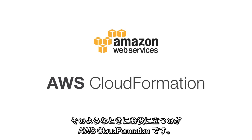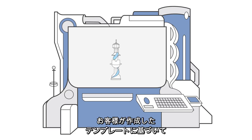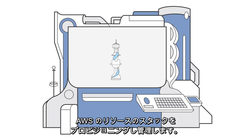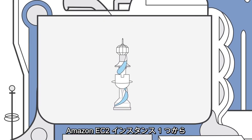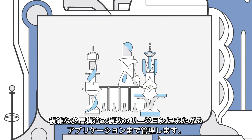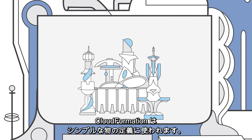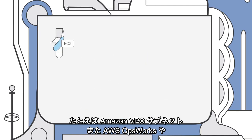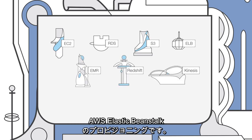Introducing AWS CloudFormation. CloudFormation provisions and manages stacks of AWS resources based on templates you create to model your infrastructure architecture. You can manage anything from a single Amazon EC2 instance to a complex multi-tier, multi-region application. CloudFormation can be used to define simple things like an Amazon VPC subnet as well as provisioning services such as AWS OpsWorks or AWS Elastic Beanstalk.